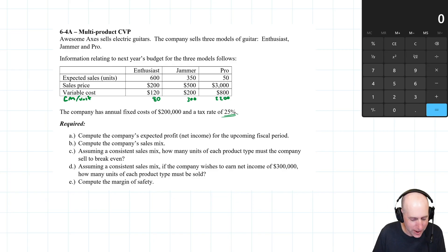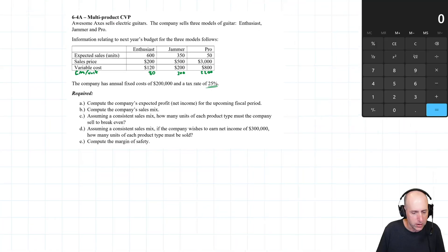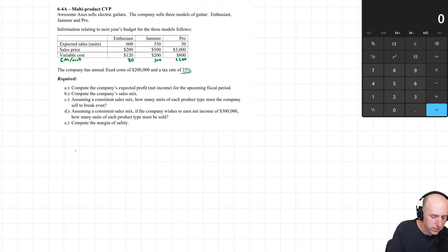It says compute the company's expected profit (net income) for the upcoming fiscal year. To calculate the profit I want to construct a little income statement. This is very roughed in: Sales minus Variable Expenses equals CM, minus Fixed Expenses equals Operating Income, minus Taxes equals Net Income. I want to do that for this company. They've got three product lines, so I'm going to do little mini income statements for the Enthusiast, the Jammer, the Pro, and then Totals.